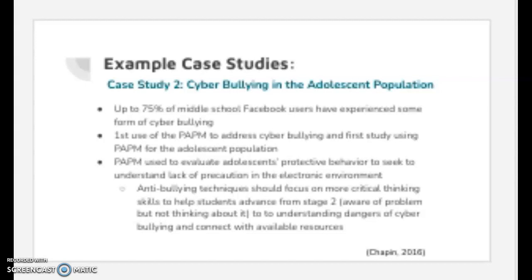Optimistic bias is the belief that bad things happen to other people. Of the participants in the study, 7–16% were in stage 1, unaware of a problem; half of the participants were in stage 2, aware of the problem but not thinking to act; and no participants were in stage 5, decided to act but not yet acted. Any student that took protective action — blocked abusive behavior or reported abuse — ended up stopping the use of social media. As adolescents progress through the stages, optimistic bias diminishes. This research tells us anti-bullying programs need to focus more on critical thinking to assist students in advancing from stage 2 to understand the evidence and dangers of cyberbullying and connect with resources in the community.